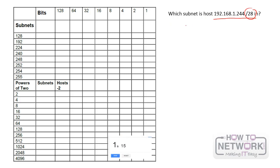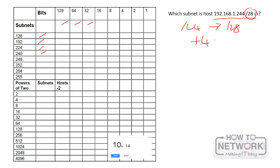This host with this subnet should be slash 24, but we're at slash 28, so we add 4 bits: 1, 2, 3, 4. Our increment is 16.